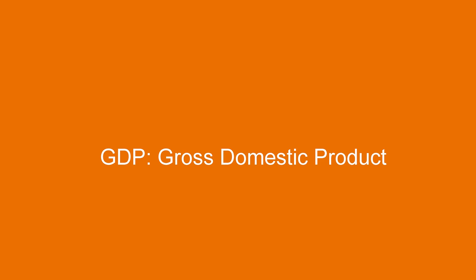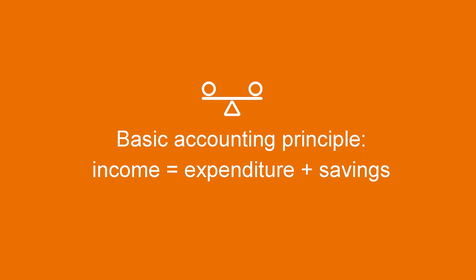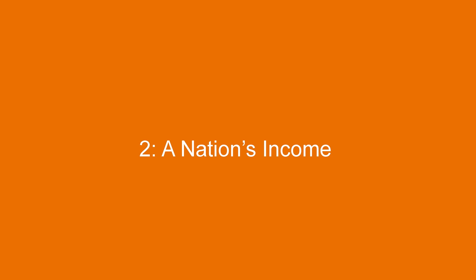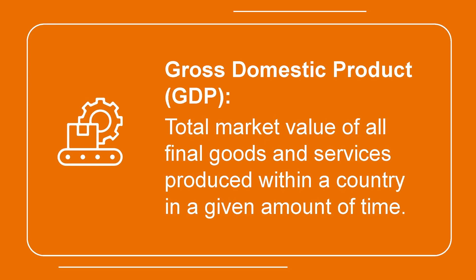A main way to measure a national economy is GDP — gross domestic product. A basic accounting principle is that the income of an agent must be equal to its expenditure plus its savings. Now, let's talk about a nation's income. From the perspective of income, GDP is the total market value of all final goods and services produced within a country in a given amount of time.